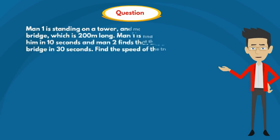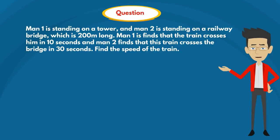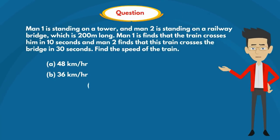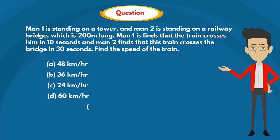Man 1 is standing on a tower and Man 2 is standing on a railway bridge which is 200 meters long. Man 1 finds that the train crosses him in 10 seconds, and Man 2 finds that the train crosses the bridge in 30 seconds. Find the speed of the train. Option A: 48 km/h, Option B: 36 km/h, Option C: 24 km/h, Option D: 60 km/h, Option E: 56 km/h.